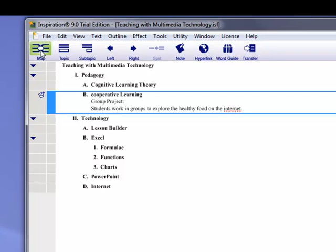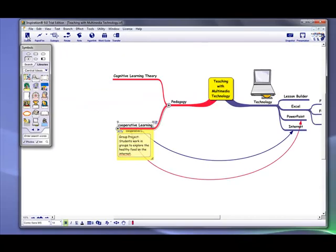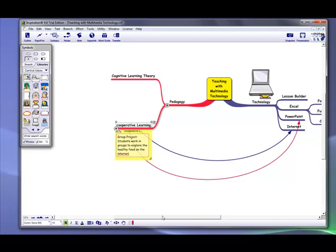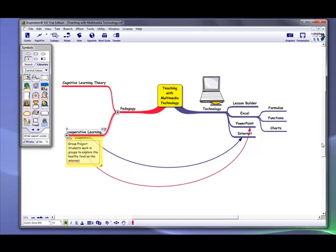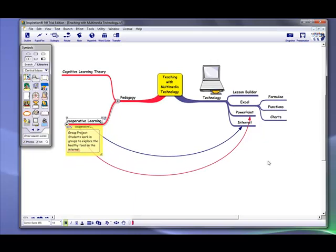So now we can also switch back to the map. Of course, you can also save this outline in a Word file or export it to a Word file. So now let me click the map again. So now we come back. And then you see you can also move it around, up and down, so that it's in a proper place.